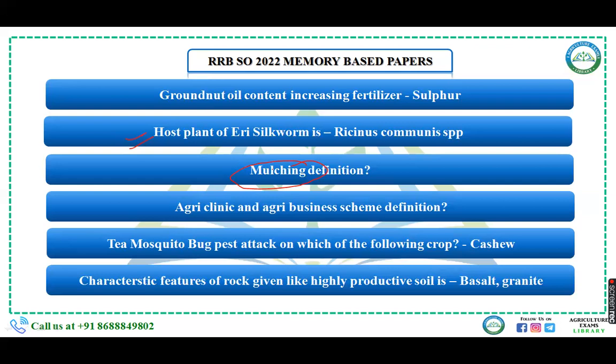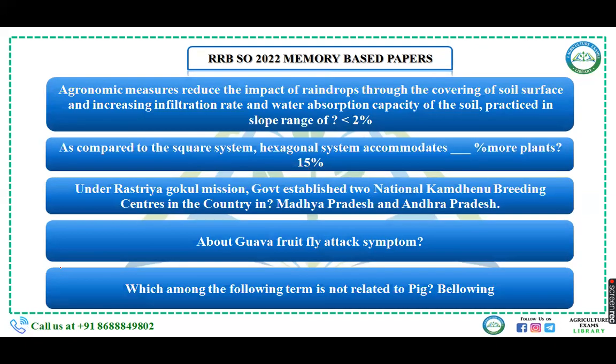Tea mosquito bug attacks which growing crop? The answer is cashew. Some question regarding characteristic features of rocks was asked — exact details were unclear. One question was asked regarding soil conservation agronomic measures: economic measures that reduce the impact of raindrops through covering of soil surface, increasing infiltration rate and water absorption capacity, practiced in a slope range of less than two percent.